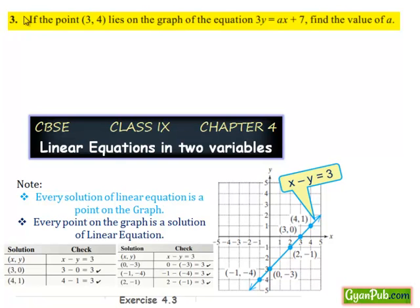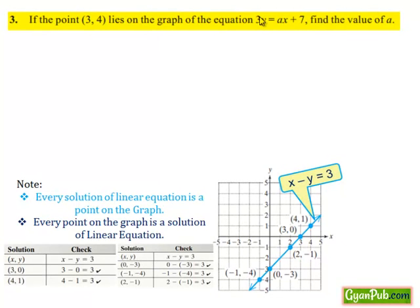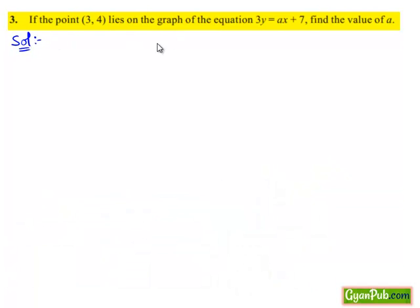Let's see question number 3. If the point (3, 4) lies on the graph of the equation 3y equals ax plus 7, find the value of a. Moving on to the solution, the given equation is 3y equals ax plus 7, which is a linear equation in two variables x and y.